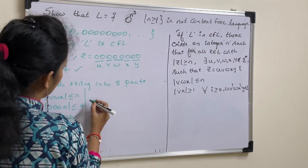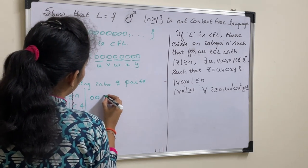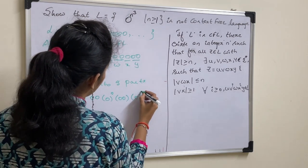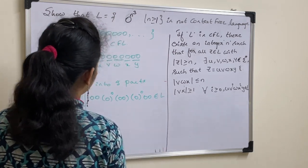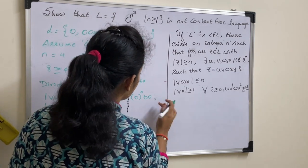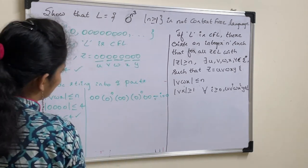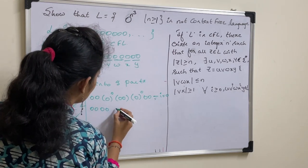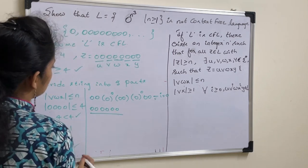What is u? u, v power i, w, x power i, y belongs to L. You must check this. Let us check this for i equal to 0. i value is taken as 0. String obtained from this is 0, 0, 0, 0 and 0, 0.